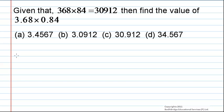Given that 368 into 84 is equal to 30912, then find the value of 3.68 into 0.84.